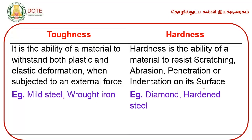Toughness is the ability of a material to withstand both plastic and elastic deformations when subjected to an external force. A tough material can withstand elastic and plastic deformations. This property is called toughness. Examples of materials with good toughness property are mild steel and wrought iron.